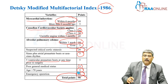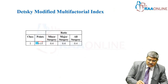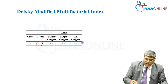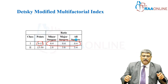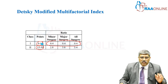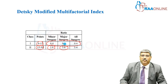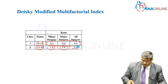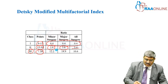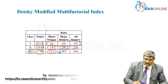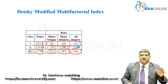Interpreting Detsky's Modified Index: Class 1 is a score of 0 to 15, with mortality of 0.4% in all types of surgery, whether minor or major. In Class 2, score is between 15 to 30 points; in minor surgery mortality is around 2.8%, in major surgery it is 3.6%, averaging 3.4%. In Class 3, the score is greater than 30 points; in minor surgery the risk is around 12.2%, in major surgery it is 14.9%, with an average of around 10.6% increased risk for patients coming for surgery.